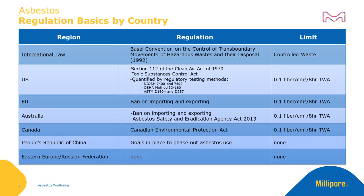The US, EU, Australia, and Canada share limits of 0.1 fiber per cubic centimeter per 8-hour TWA, and place bans or strict controls on import or export. In the US, regulatory testing methods are published by NIOSH, either 7400 or 7402, OSHA with Method ID 160, and ASTM, including Methods D1604 and D257.